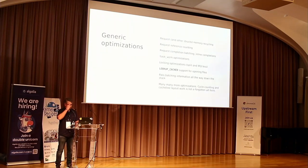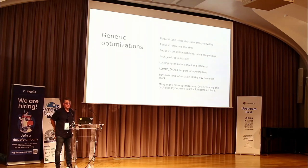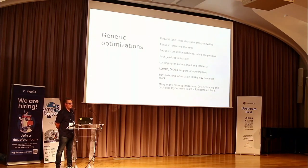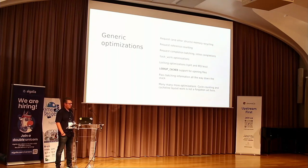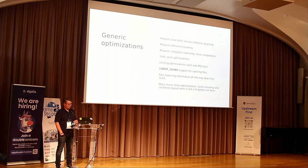There's a bunch of random optimizations since the 2019 talk. A notable one is the lookup cache, a way to do non-blocking file lookups — usable outside of io_uring as well since it's just a lookup flag. There are a lot of other efficiency improvements made over time.